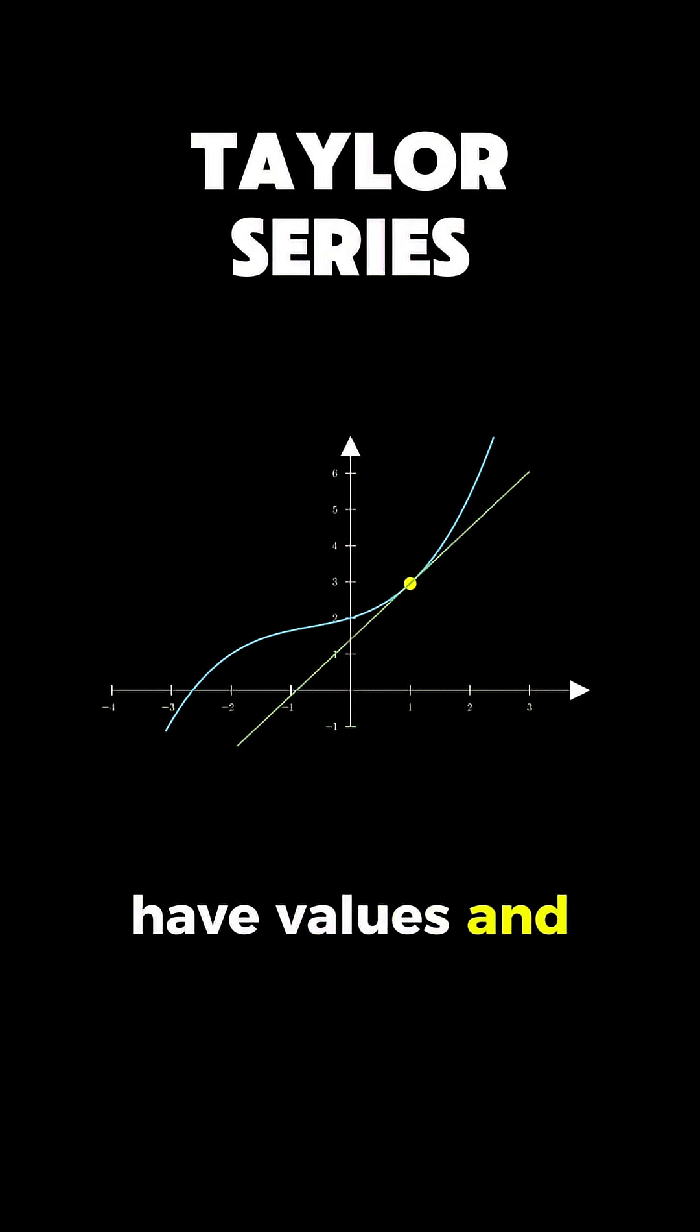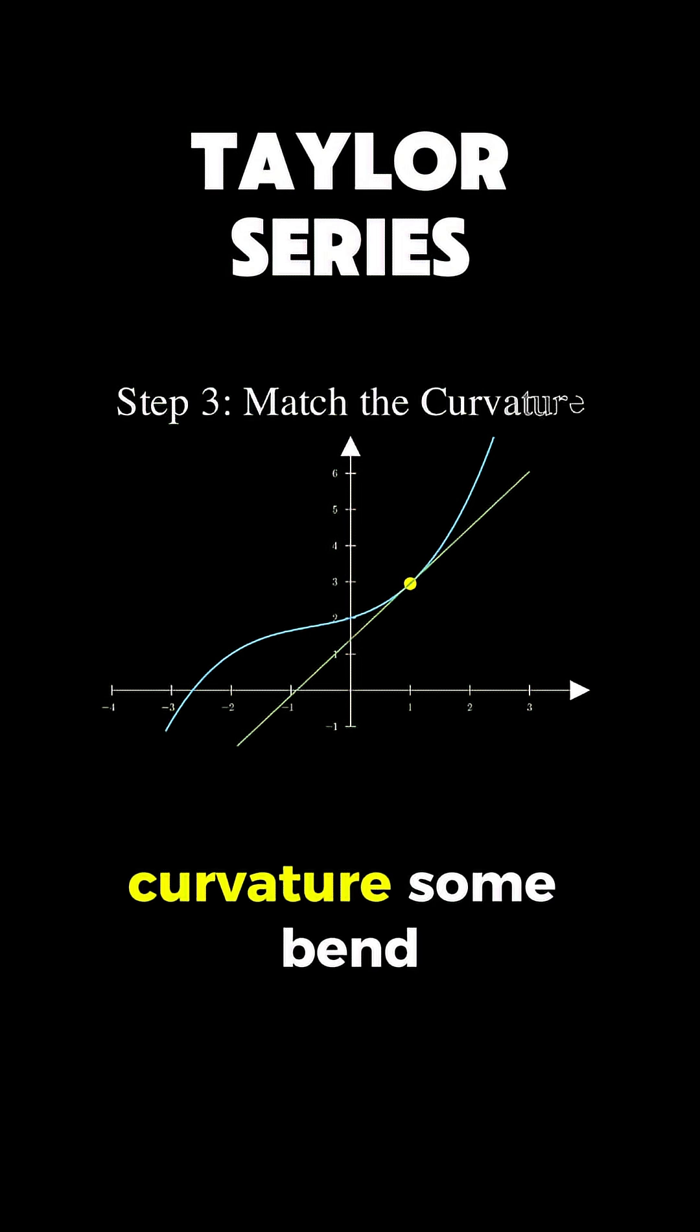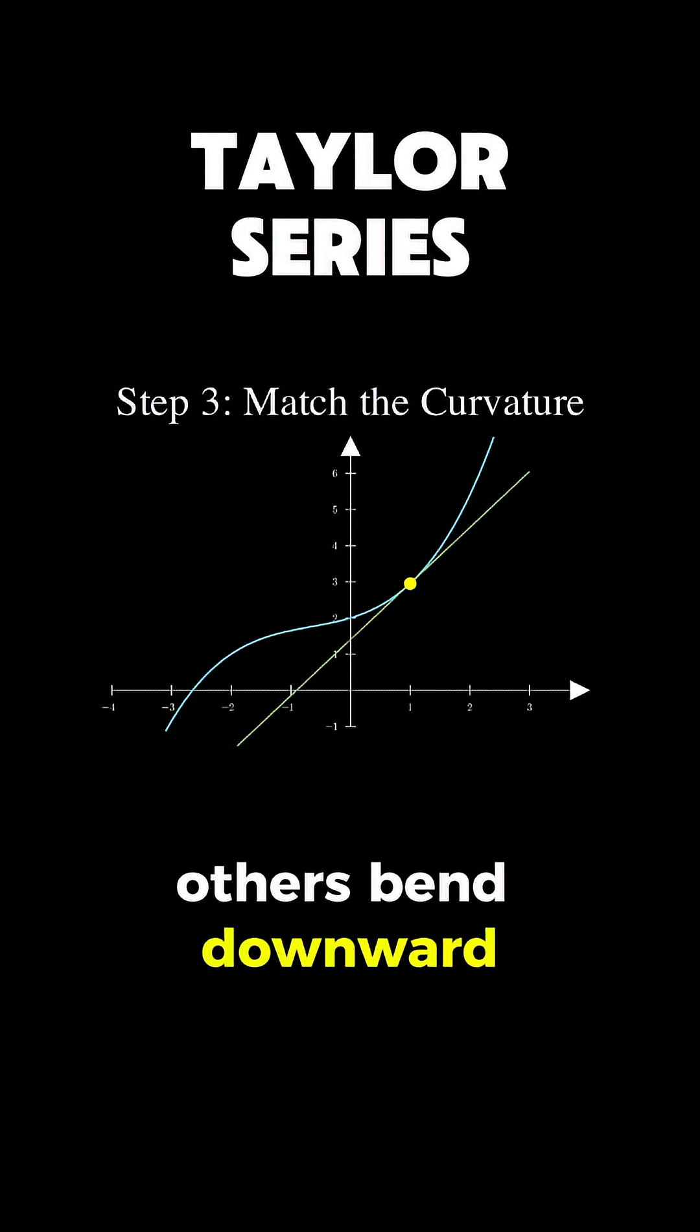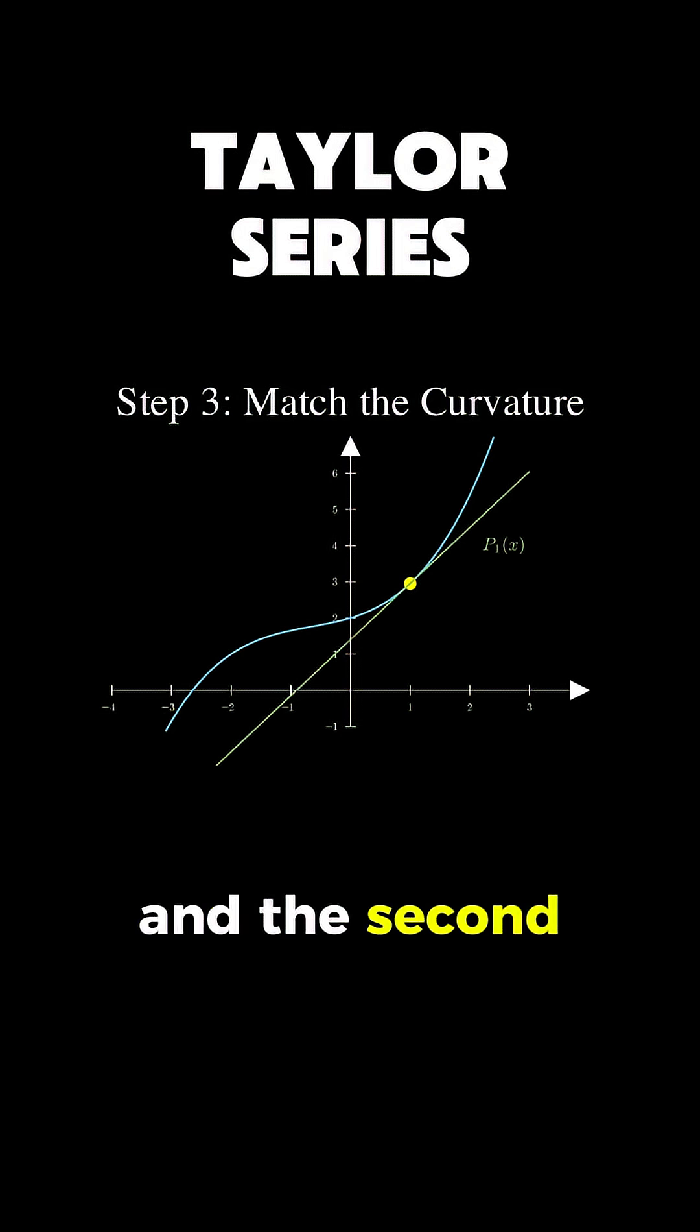Functions don't just have values and slopes, they also have curvature. Some bend upward like a smile, others bend downward like a frown, and the second derivative tells us about this bending.